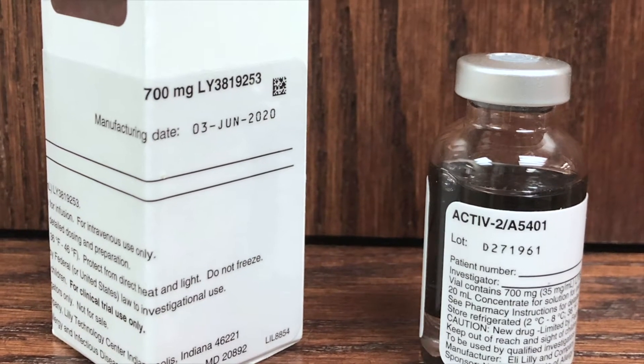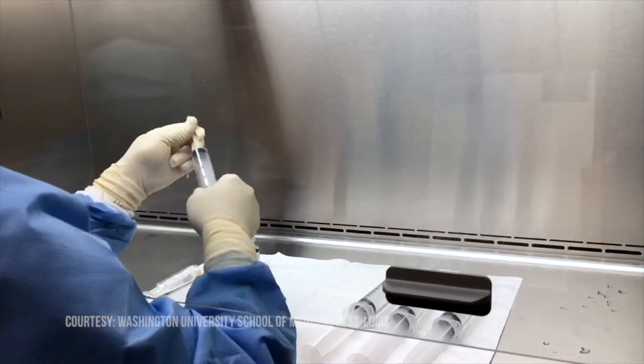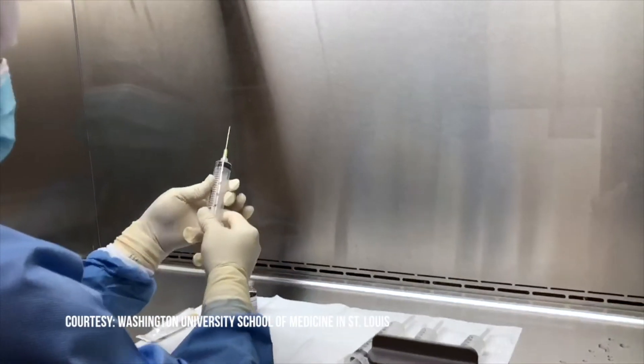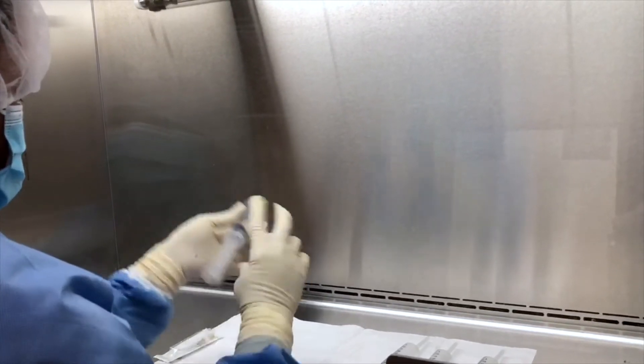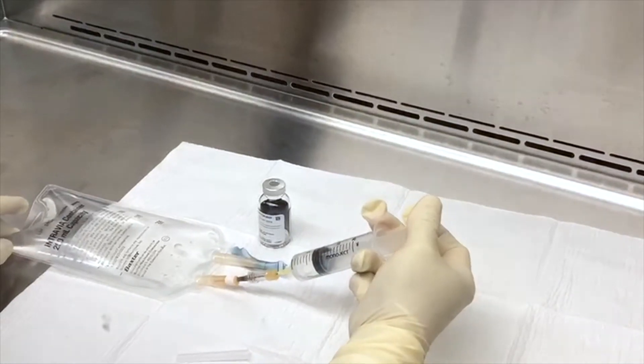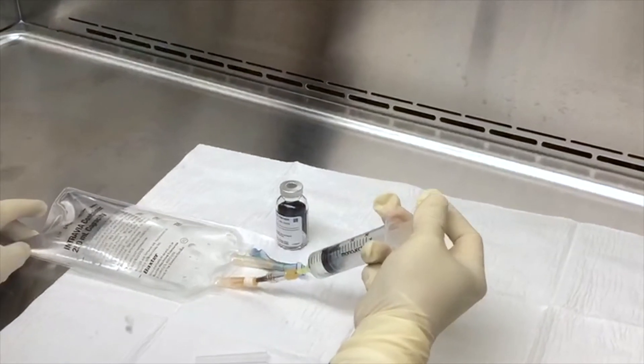Those are monoclonal antibody therapies that give preformed antibodies. One strategy for people who already have COVID and are sick in the ICU is to give antibodies, like former President Trump received, Regeneron antibodies. But there are a lot of problems with that.